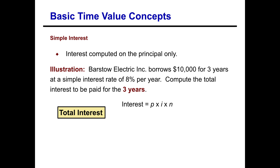For three full years, the interest would be ten thousand times eight percent times three periods, which is twenty-four hundred dollars. Again, it's simple interest computed on an annual basis.